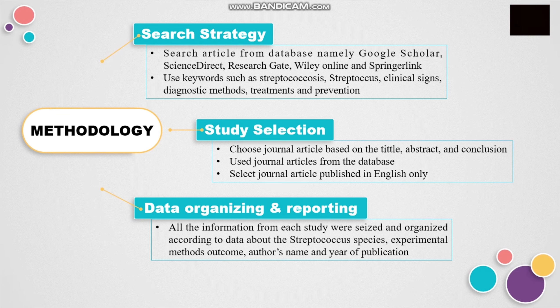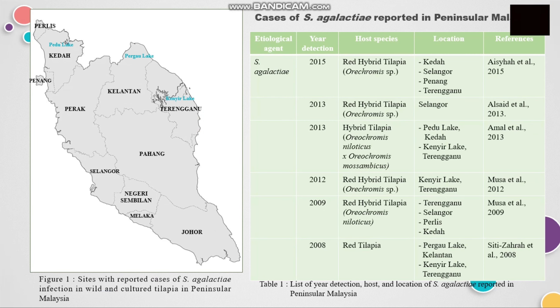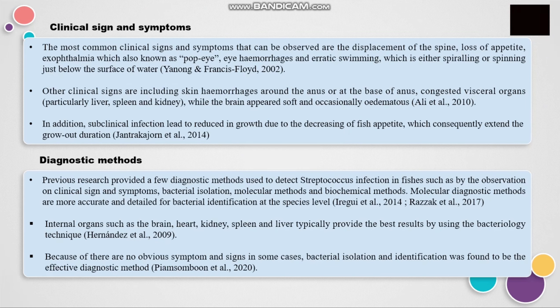For the results and discussion, this table and map shows Streptococcus agalactiae cases reported in Peninsular Malaysia. Streptococcus agalactiae is believed to be the most commonly reported species in Peninsular Malaysia. For the clinical signs and symptoms, the most common observable signs are displacement of the spine, loss of appetite, pop eye, eye hemorrhage, and erratic swimming. Other clinical signs include hemorrhage around the base of the fins, congested visceral organs particularly the liver, spleen, and kidney, while the brain appears soft and occasionally edematous. Subclinical infections lead to reduced growth due to decreasing fish appetite, which consequently extends the grow-out duration.